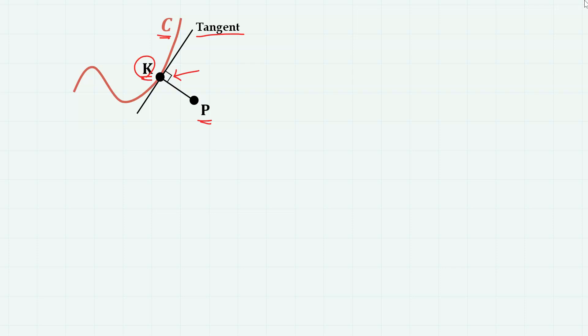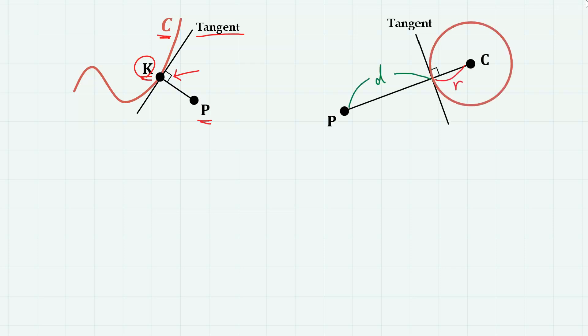Generally, the distance between point P and curve C is the distance between point P to point K, where point K is a point on the curve such that the tangent to the curve at point K becomes perpendicular to line PK. You'll need calculus to prove that. In the case of a circle, however, the situation becomes much simpler: the distance between point P and a circle is simply the distance between point P and the center of the circle C minus the radius R.